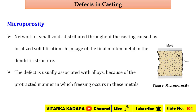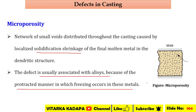The final defect is micro porosity — a network of micro voids distributed throughout the casting, caused by local solidification shrinkage of the final metal in the dendrite structure. This defect is usually associated with alloys, because of the manner in which phase solidification occurs. Micro porosity can only be identified using microscopes; any visible holes shown in diagrams are just for representation purposes.